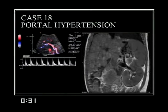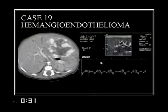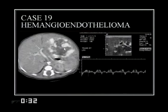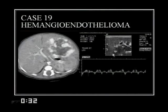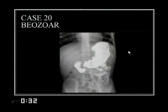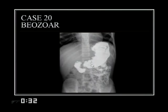The liver mass enhances peripherally and fills in centrally over time — this is hemangioendothelioma, which shows abundant vascularity on sonography. The child in the psychiatric ward shows multiple filling defects in the gastric lumen on barium study — this is a bezoar.